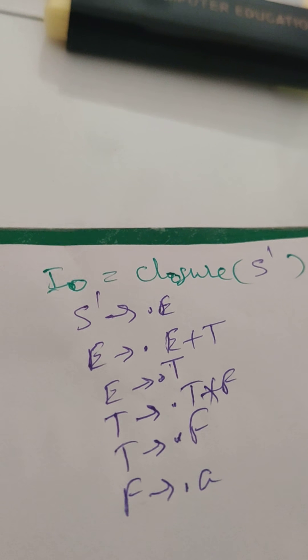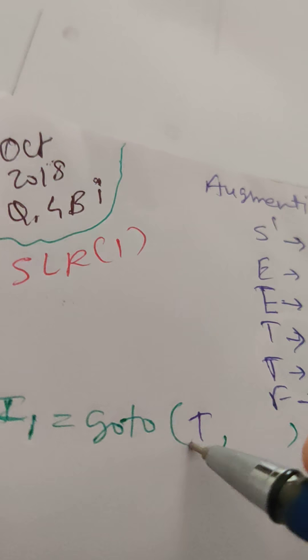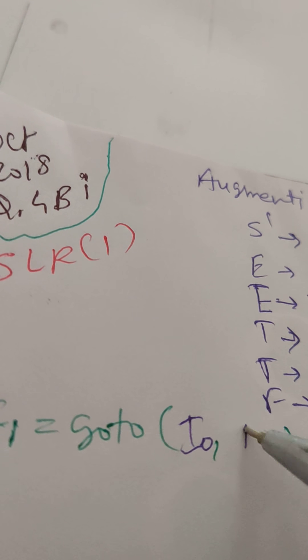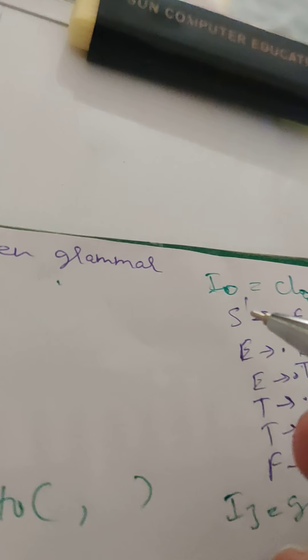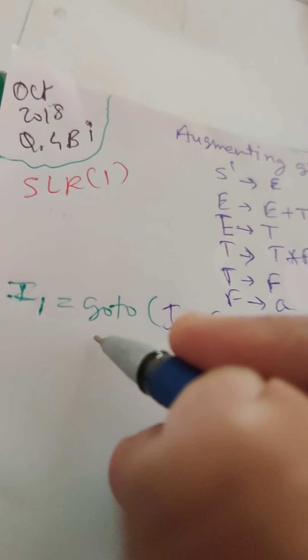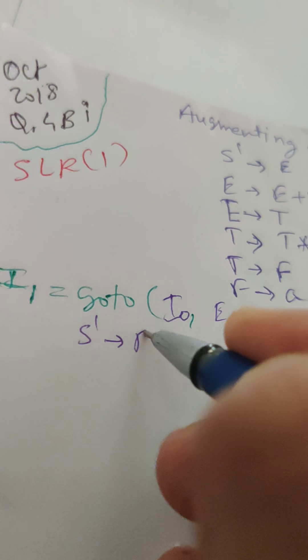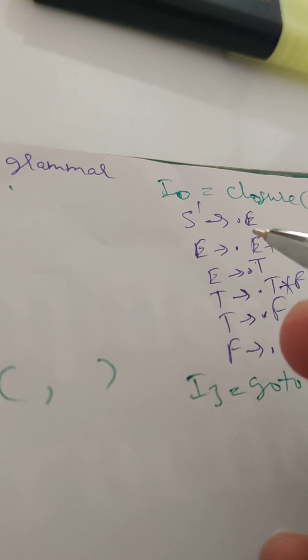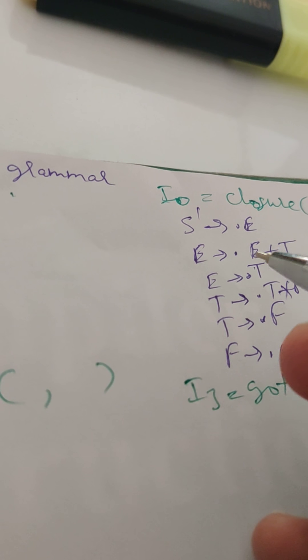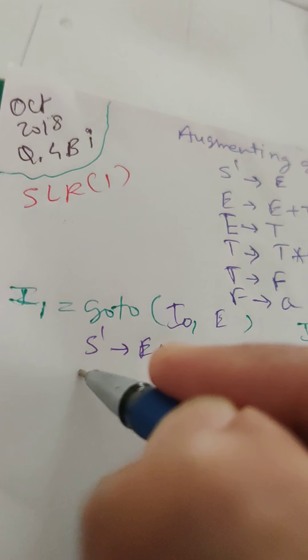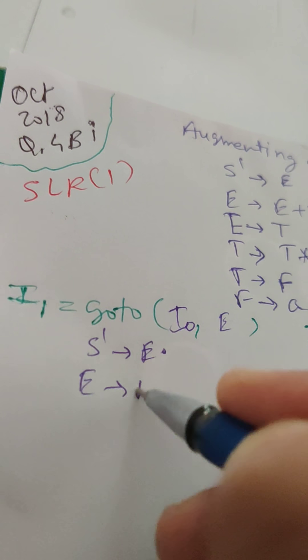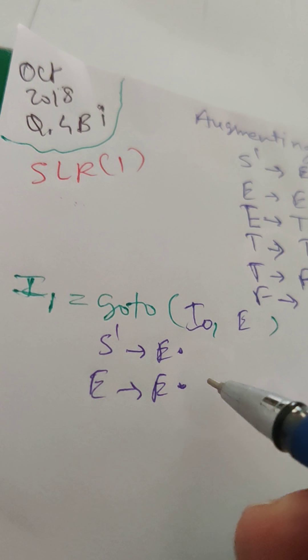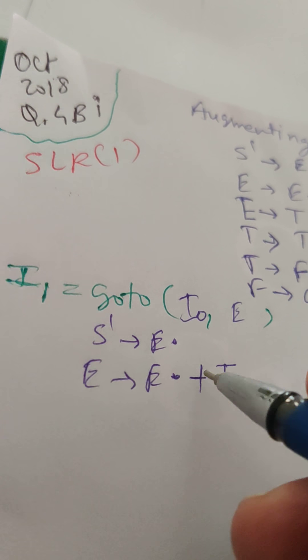Item number I1 is the GOTO of I0 on E. We get S' → E. (the dot shifts), and since E also appears in E → E.+T, we include E → E.+T. After the dot is terminal plus.